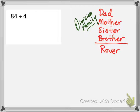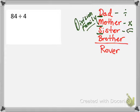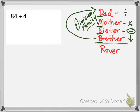Before we start division, I want you to look at this — I call it the division family. These are steps to help us remember what to do when doing long division. We start with Dad, Mother, Sister, Brother, and sometimes Rover — the family dog. The D represents Divide, M means Multiply, S stands for Subtract, B means Bring down the next number, and R for Rover represents Remainder. Sometimes you'll have to repeat these steps before you get to see if the family has a dog.